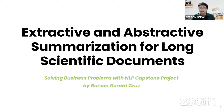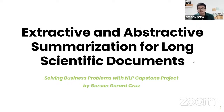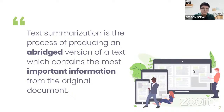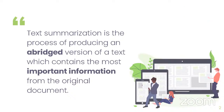Before I get into the details of my pipeline, I'd first like to set the context on what text summarization is and why it can be useful. In the simplest terms, text summarization is the process of producing an abridged version of a text while still retaining its most important information from the original document. We're technically taking a text and providing its important information in a more digestible, concise manner.